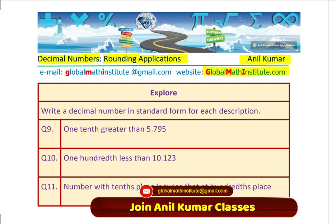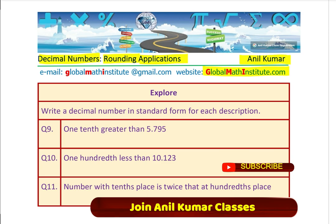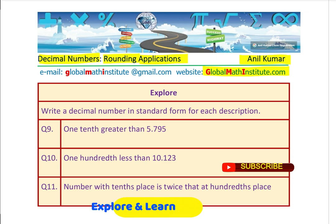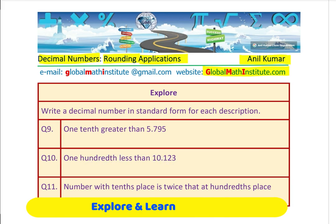Question number nine: one tenth greater than five point seven nine five. Then question number ten: one hundredth less than ten point one two three. And eleven is: a number whose tens place is twice that in the hundreds place.